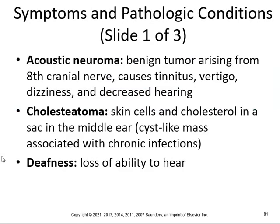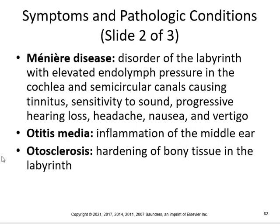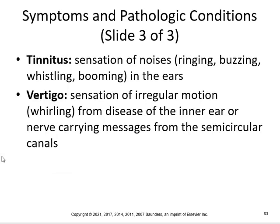Ear disorders: An acoustic neuroma is a benign tumor arising from the eighth cranial nerve, causing tinnitus, vertigo, dizziness, and decreased hearing. A cholesteatoma is skin cells and cholesterol in a sac in the middle ear — a cyst-like mass associated with chronic infections. Deafness is loss of ability to hear. Meniere's disease is a disorder of the labyrinth with elevated endolymph pressure in the cochlea and semicircular canals, causing tinnitus, sensitivity to sound, progressive hearing loss, headache, nausea, and vertigo. Otitis media is inflammation of the middle ear. Otosclerosis is hardening of the bony tissue in the labyrinth. Tinnitus is a sensation of noises — ringing, buzzing, whistling, booming in the ears. Vertigo is a sensation of irregular motion, whirling, from disease of the inner ear or the nerve carrying messages from the semicircular canals.